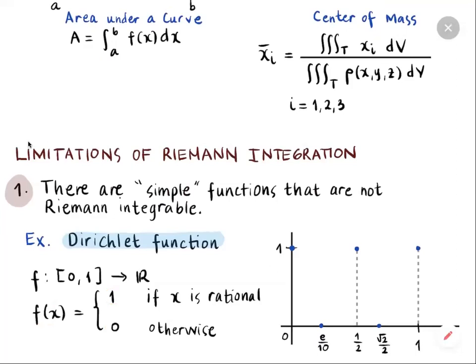Therefore the Dirichlet function is the characteristic function of the rational numbers on the closed interval [0, 1]. Here is a small portion of the graph of the Dirichlet function for intuition.